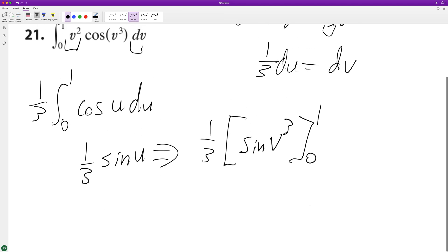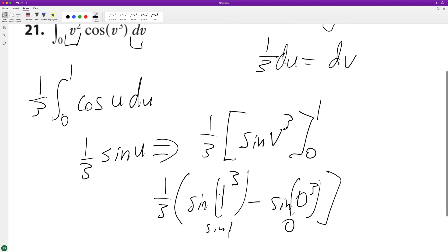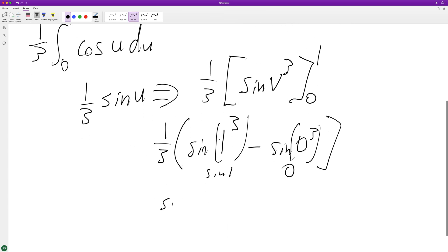So this can be 1/3 times sine of 1 cubed minus sine of 0 cubed. This is equal to 0, this is just sine of 1, so what we end up with is sine of 1 over 3.